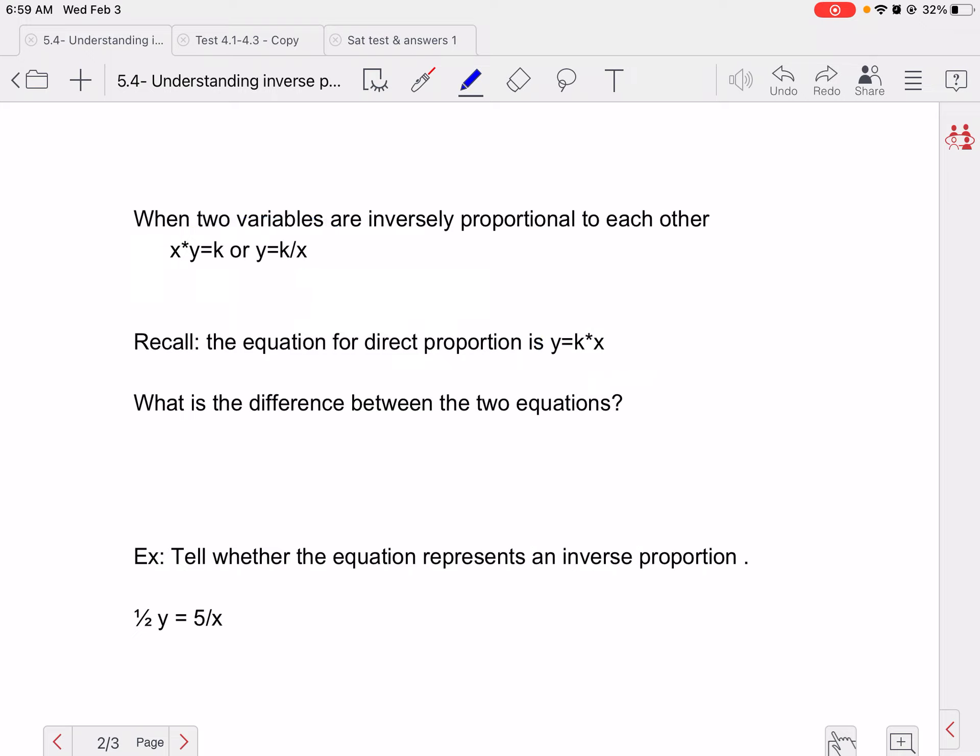And again, the biggest difference between those is we are dividing in direct proportions, and we are multiplying in inverse proportions. And by that, I mean we're multiplying and dividing the variables.